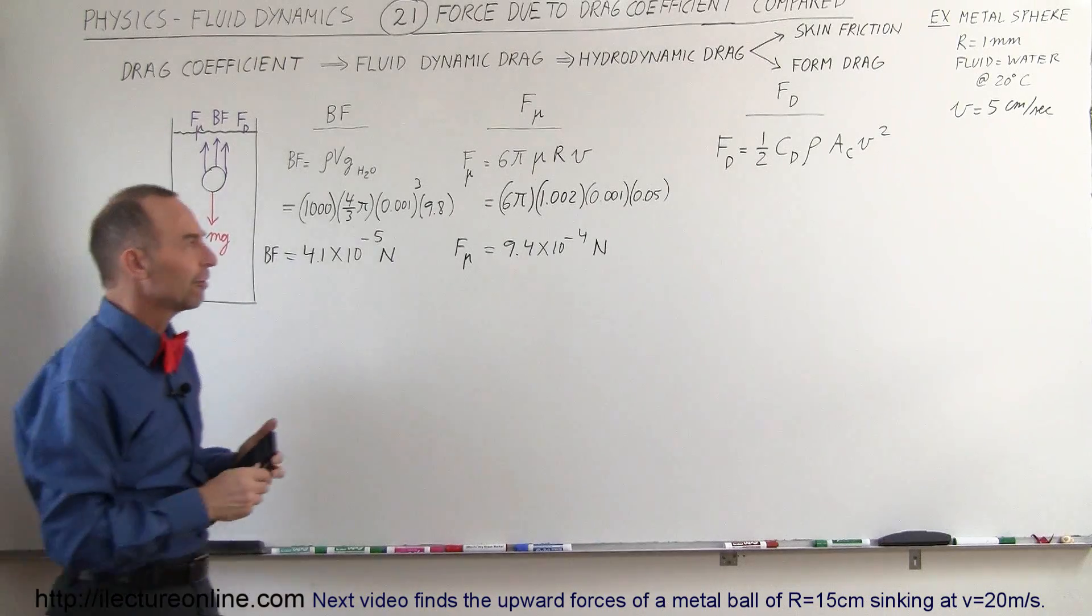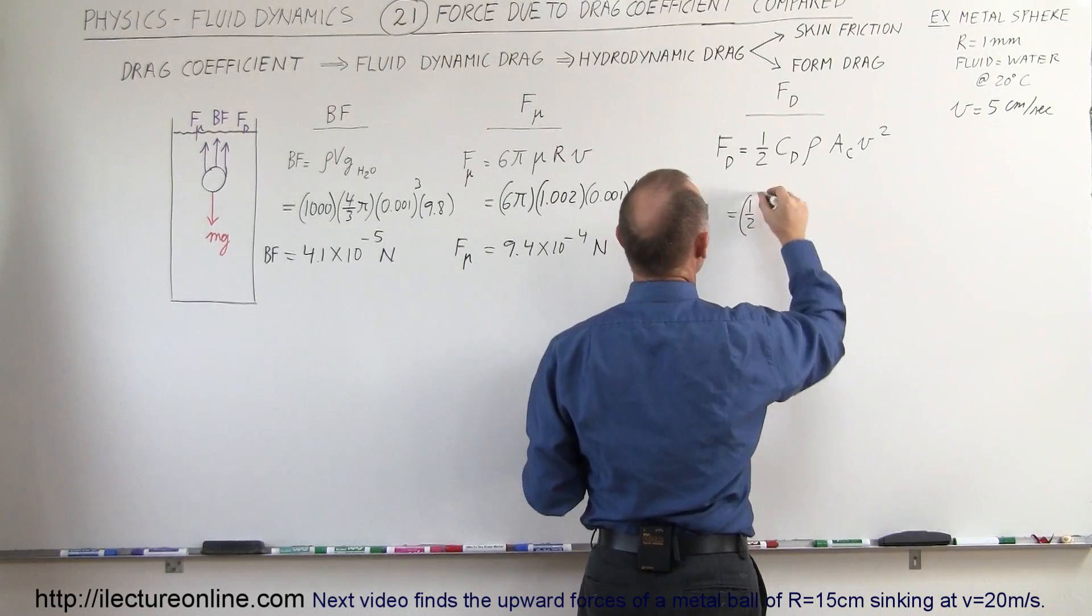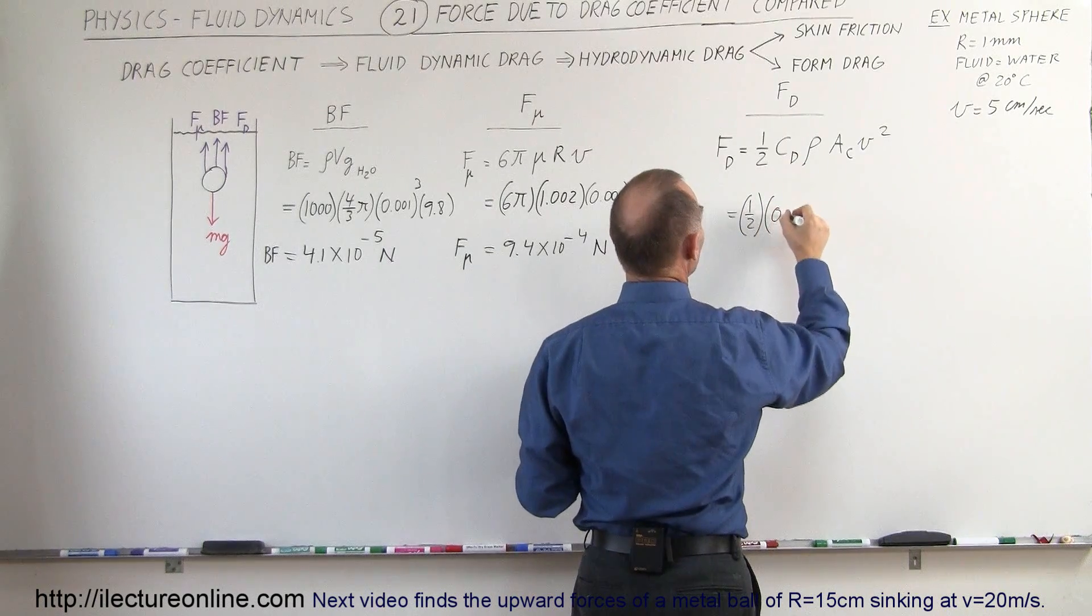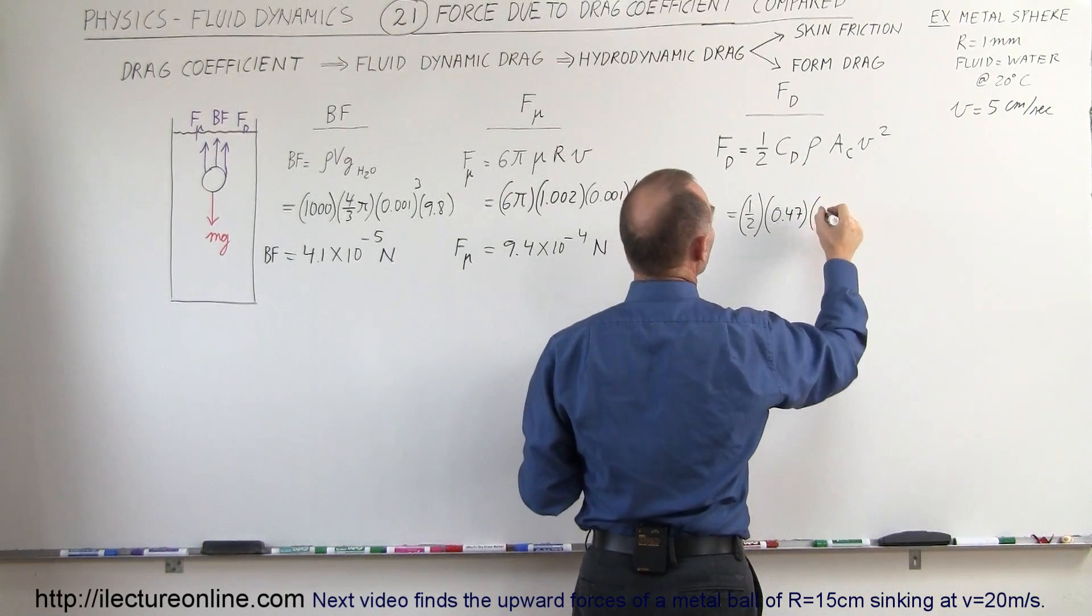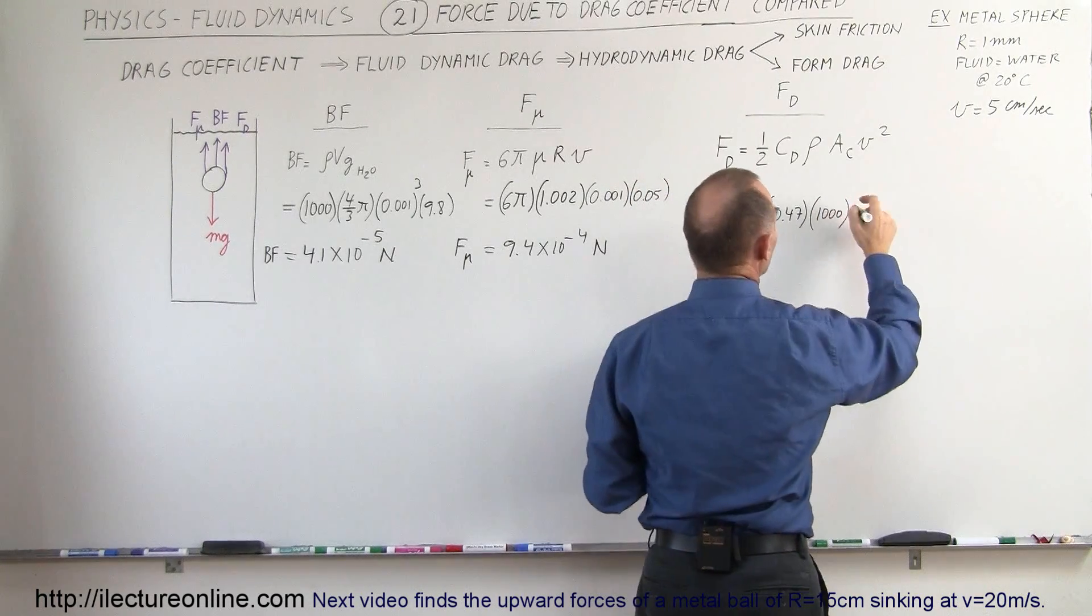Finally, the drag coefficient—what effect does it have? Plugging in the numbers, we get 1/2 times, since it's a sphere, the drag coefficient is 0.47. The density of the liquid is 1000 kilograms per cubic meter.